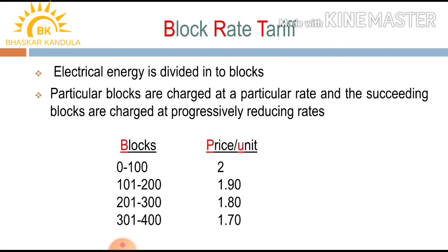The rate for the first block, 0 to 100 units, is rupees 2 per unit. For the second block, 101 to 200 units, the price per unit is 1.90. For the third block, 201 to 300 units, the price per unit is 1.80. For the fourth block, 301 to 400 units, the price per unit is 1.70.